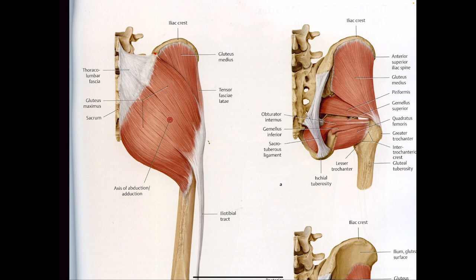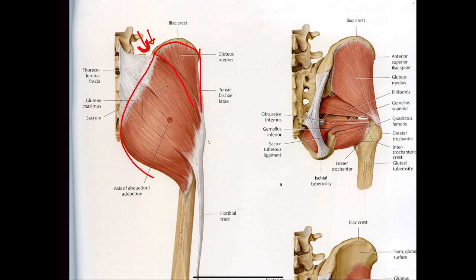The gluteus medius runs along the axis of the interior of the iliac crest and creates a little bit of a triangle. The gluteus maximus is the larger one — maximus is always going to be bigger. It runs down about halfway down the iliac crest, right where you tend to see a little divot on some people. It goes all the way down and makes that little butt crack that we see.